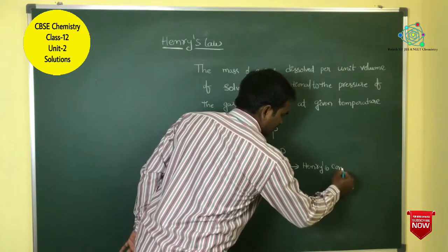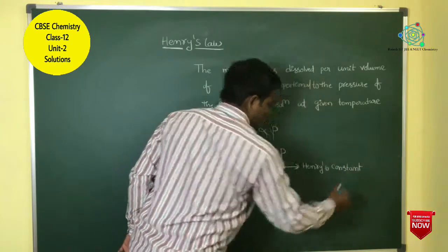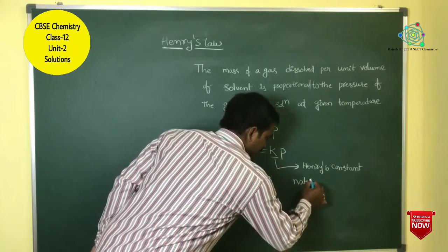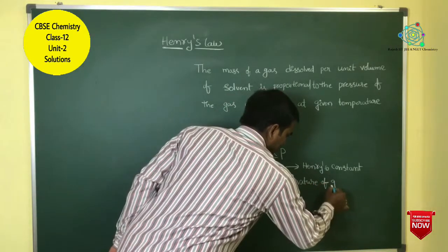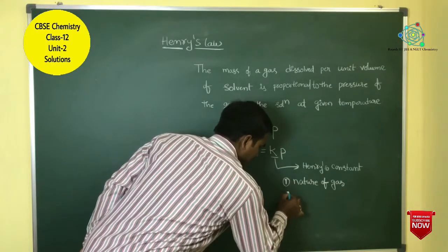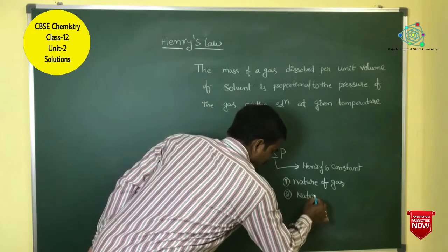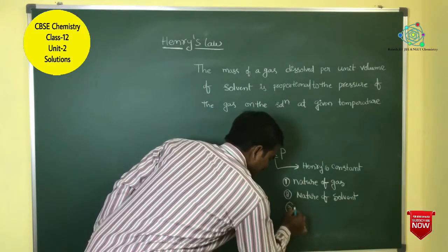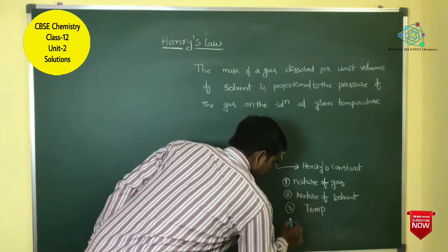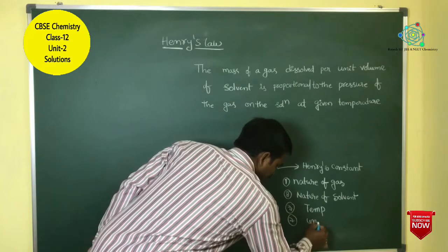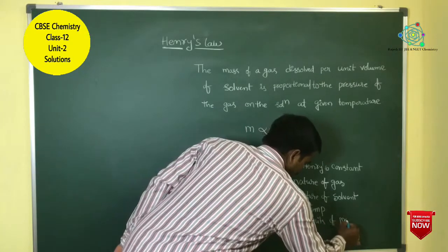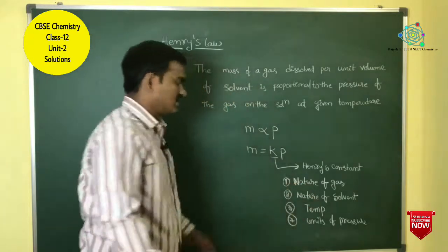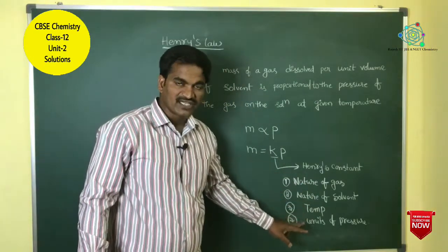Henry's constant depends on: the nature of the gas, the nature of the solvent, the temperature, and the units of pressure. So it depends on all four of these factors.